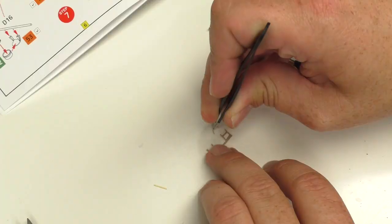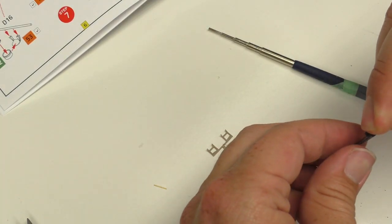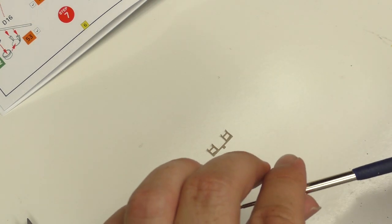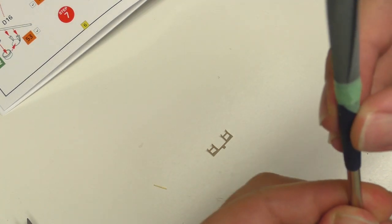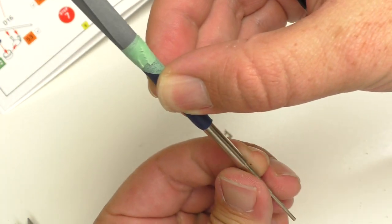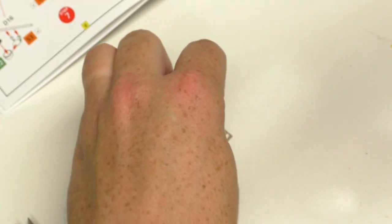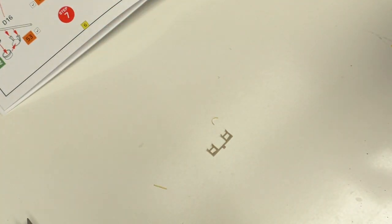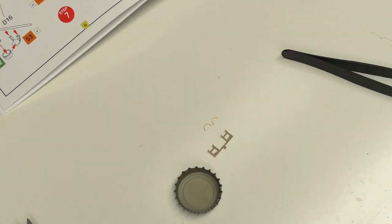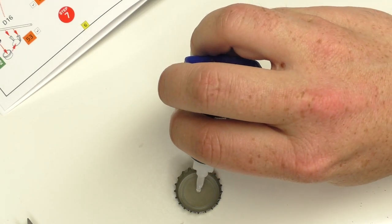Yeah, those are just a skosh too wide, so we're going to go down a size. Again, using the wonders of finger pressure, mash these things to a more appropriate radius. A little bit of Loctite Ultra Control gel stuff.